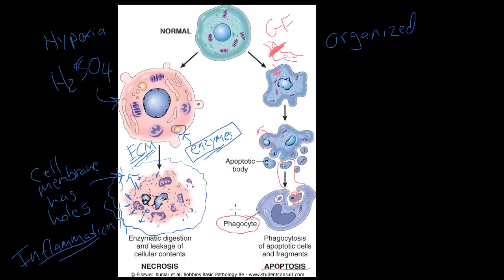The main difference between necrosis and apoptosis is inflammation. In apoptosis, the membrane is intact the whole time — even the apoptotic bodies still have their membrane. Because they're membrane-bound, the contents are not leaking out into the ECM. If stuff were leaking into the ECM, apoptosis would cause inflammation — but it doesn't. So the big difference: necrosis causes inflammation, apoptosis does not.